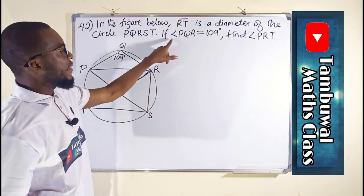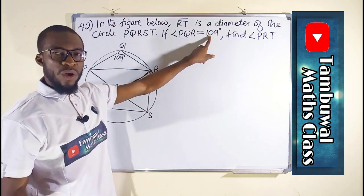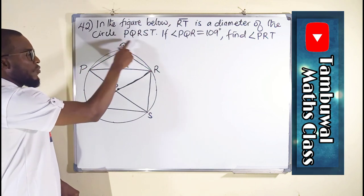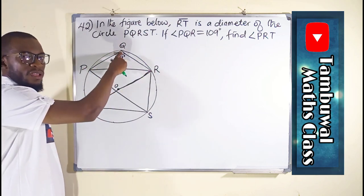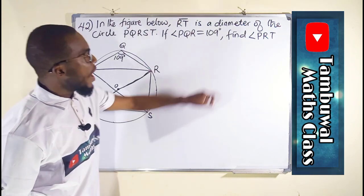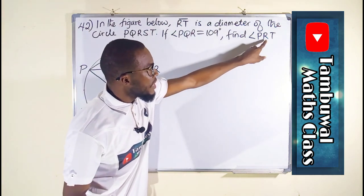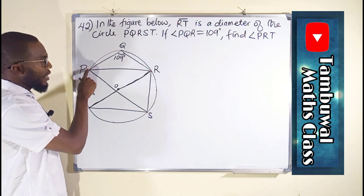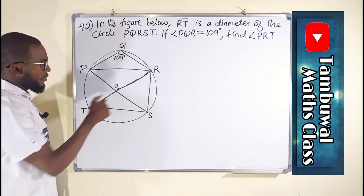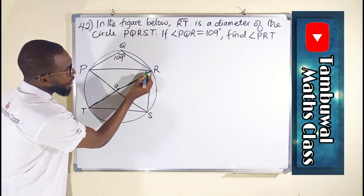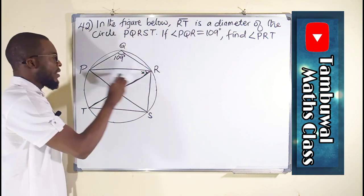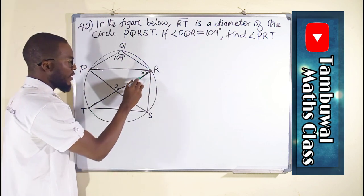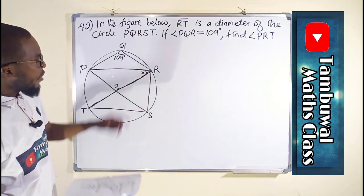Alright, if the angle PQR is 109 degrees, PQR, we are referring to this angle here. We are asked to find angle PRT. P, from here, RT. So this is the angle we are looking for. Let me even call it X. P, R, then T. This is the angle we are looking for.